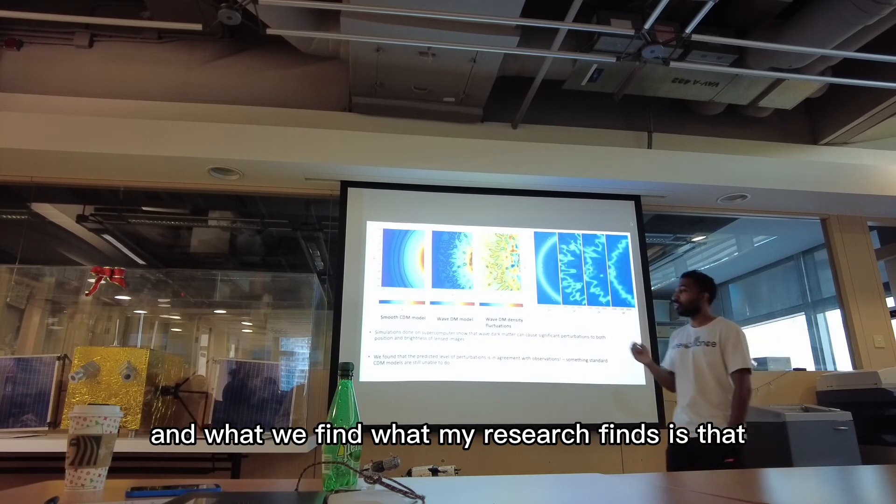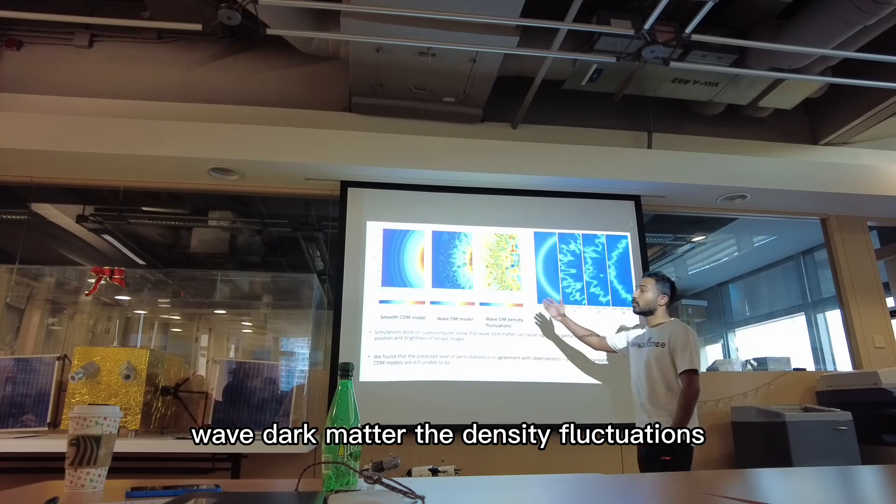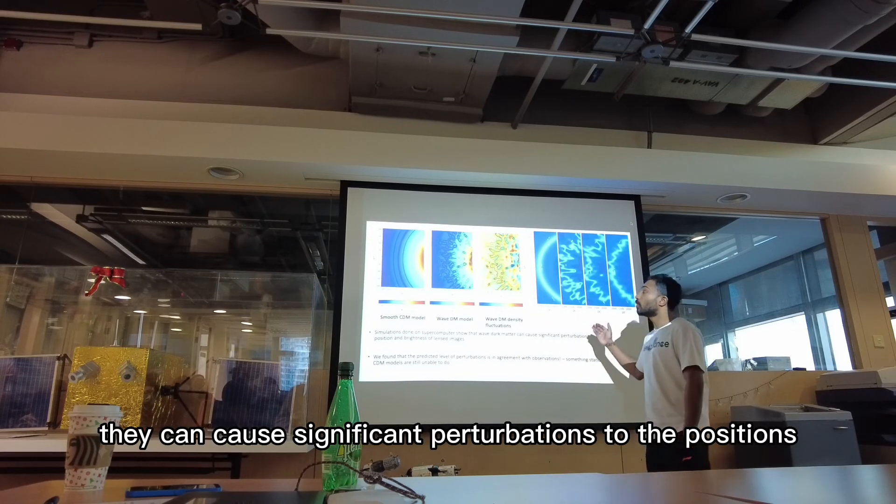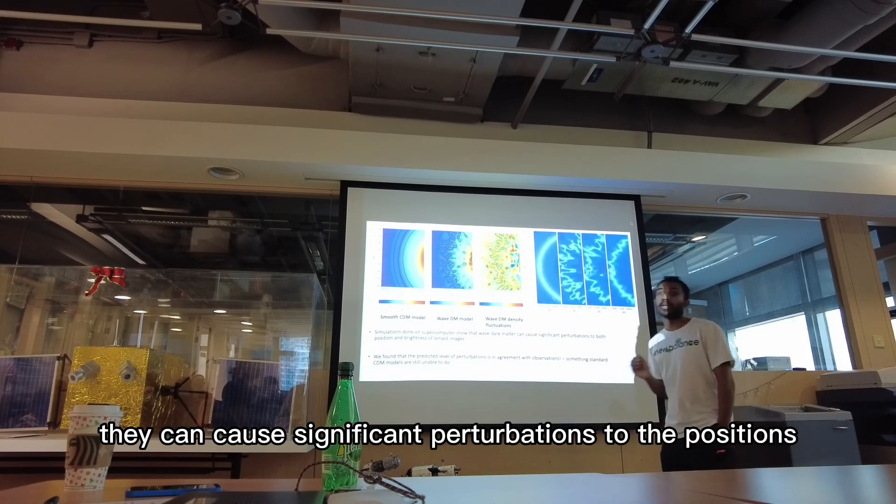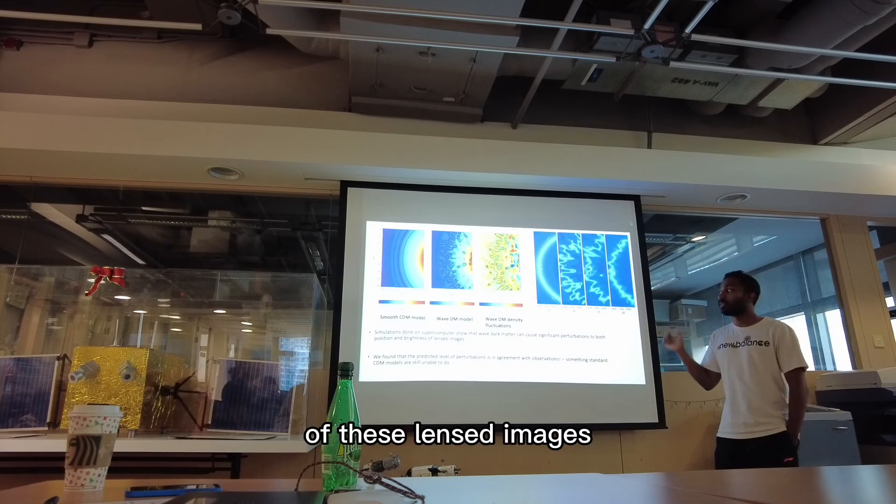And what we find, what my research finds, is that wave dark matter, the density fluctuations, they can cause significant perturbations to the positions and shapes of these lens images.